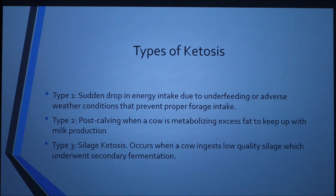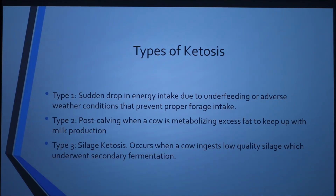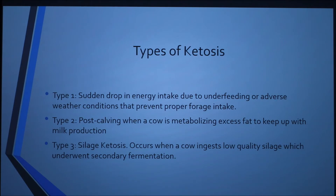There are three types of ketosis. Type 1 is a sudden drop in energy intake, due to either underfeeding or adverse weather conditions like a snowstorm or bad rain, which prevents the cow from eating sufficient amounts of dry matter. Type 2 occurs post-calving, where the cow is metabolizing excess body fat to meet the demands of milk production — cows that are too fat at calving are at the highest risk. Type 3 is silage ketosis, which occurs when a cow ingests low-quality silage that undergoes fermentation, increasing the risk of ketosis.